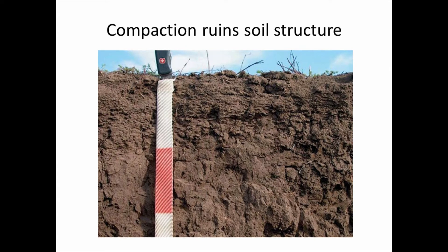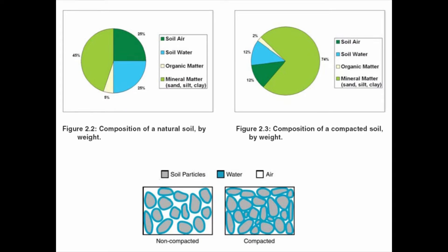Compaction can ruin soil structure. When you crush and compact soil down, you change the structure for the worse. Soil structure takes a very long time to develop but can be harmed very quickly. The ideal soil composition is about 25% airspace, 25% soil water, and 50% solids. When you compact the soil, you're squeezing out the pore space, leaving a higher percentage of mineral matter and a smaller amount of air and water space, making the soil heavier and closing off the pore spaces vital for plant growth.